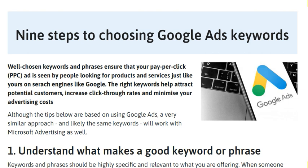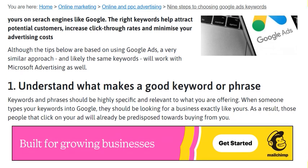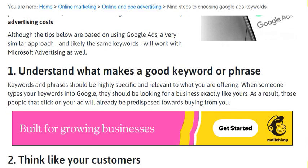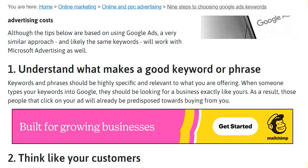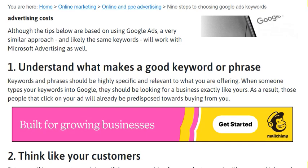Today we are going to discuss nine steps to choose Google Ads keywords. Choosing keywords and phrases ensures that your pay-per-click (PPC) ad is seen by people looking for products and services just like yours. Search engines like Google and the right keywords help attract potential customers. The tips below are based on using Google Ads, but a very similar approach applies elsewhere.